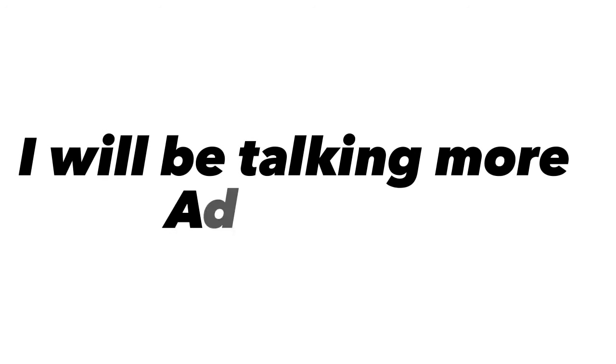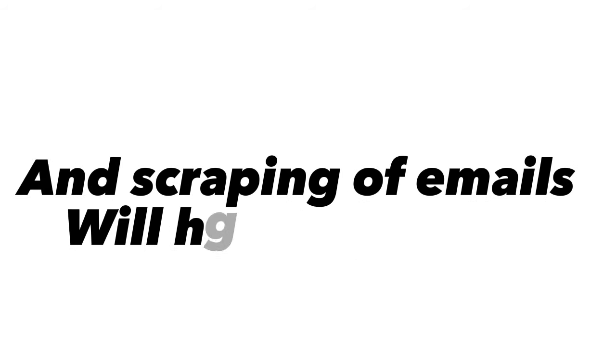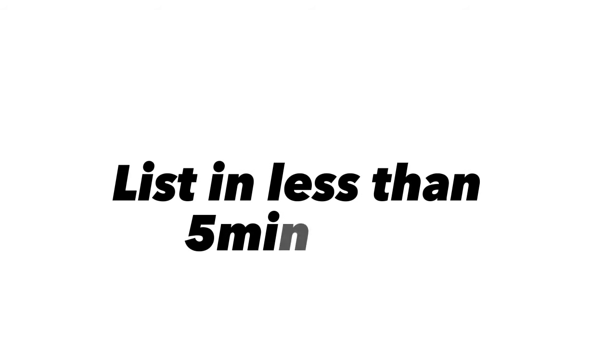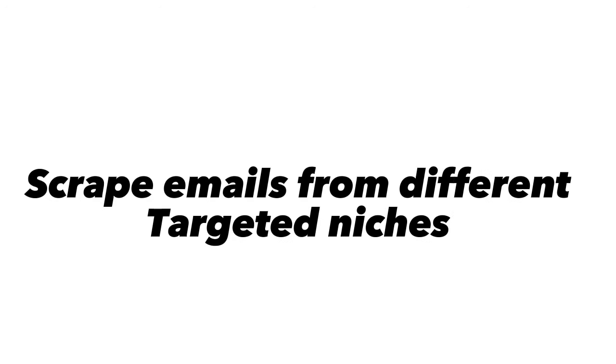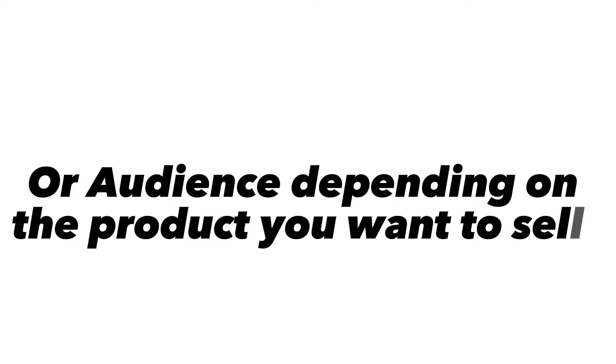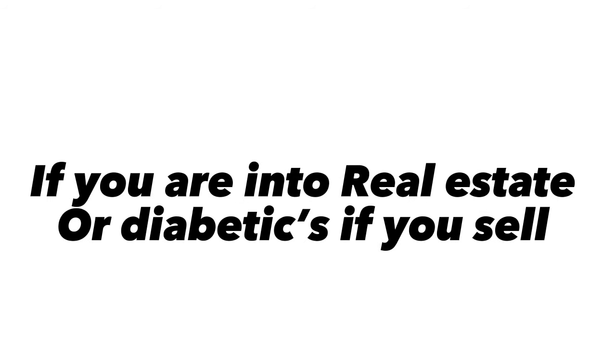Basically we have two types of email marketing: warm email marketing and cold email marketing. In this video I'll be talking about cold email marketing, which is copying people's emails you don't know from the internet and sending them messages about your product or services. The act of getting these emails from the internet is called email scraping, and scraping will help you build at least 10,000 or more emails in less than five minutes.